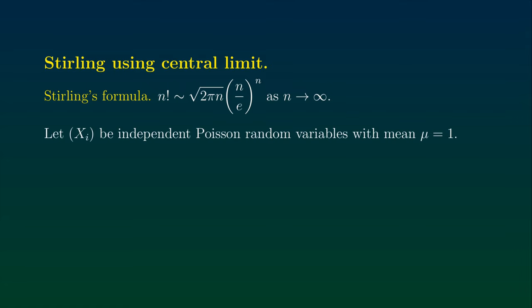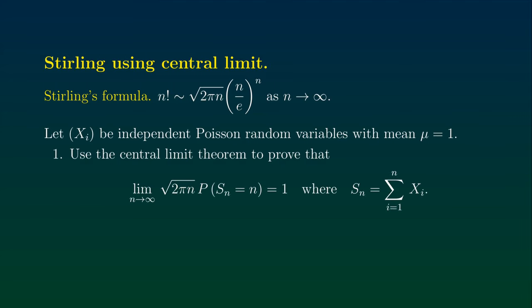To solve the problem, we let xi be a sequence of independent Poisson random variables with the same mean μ = 1. As usual in the context of the central limit theorem, we call Sn the sum of the first n of those random variables x1 + x2 + ... + xn. The first question is to use the central limit theorem to prove that √(2πn) times the probability that Sn equals n converges to 1 as n goes to infinity.